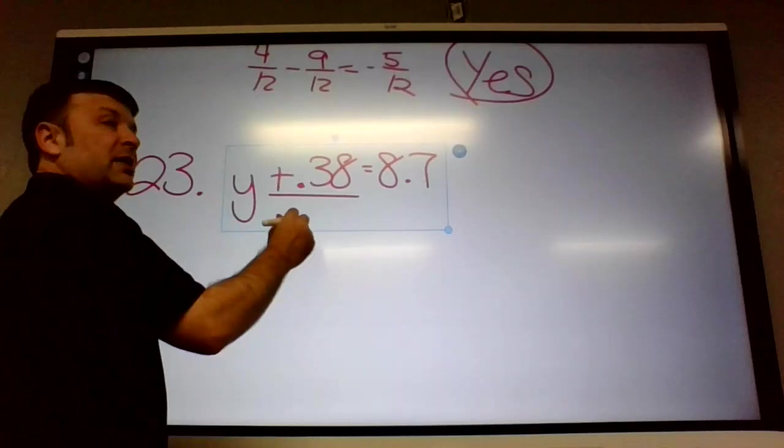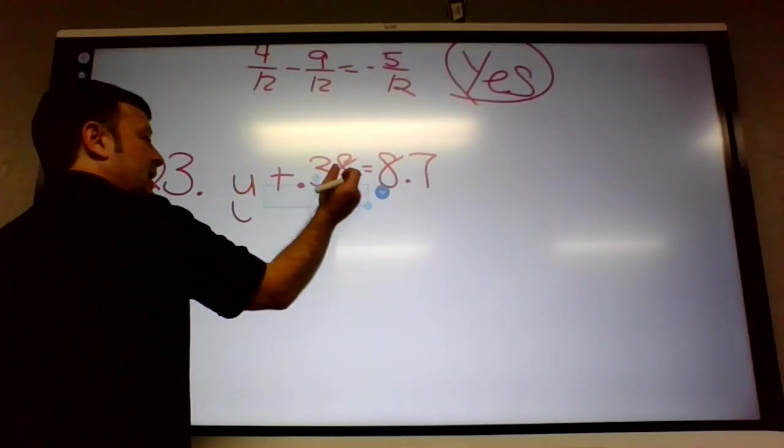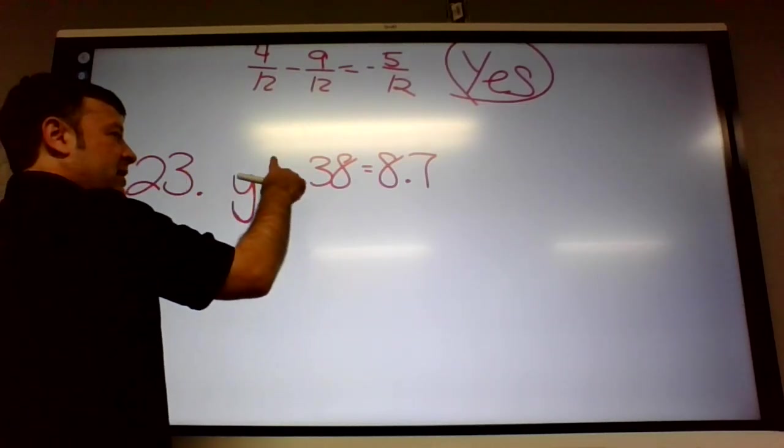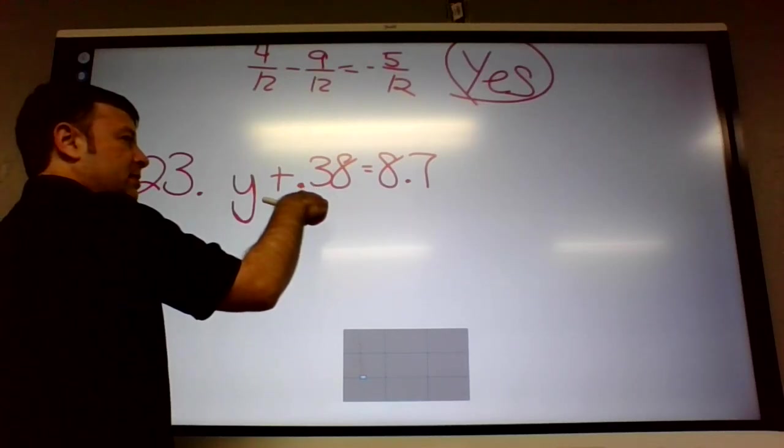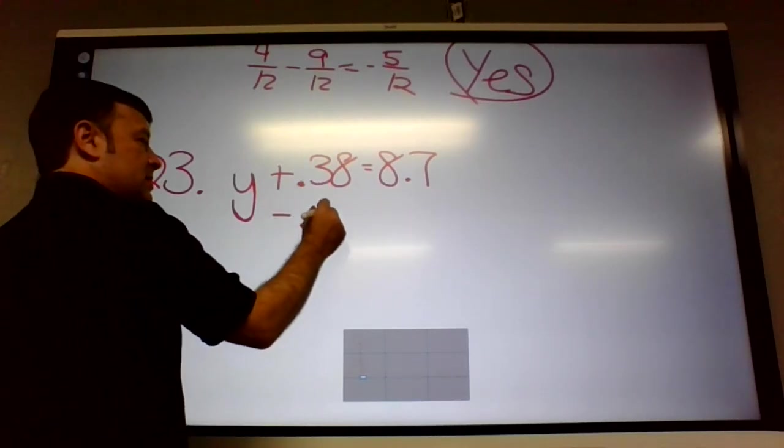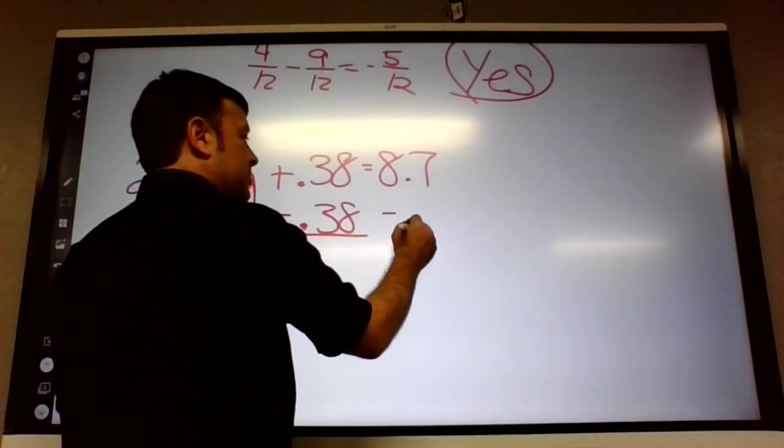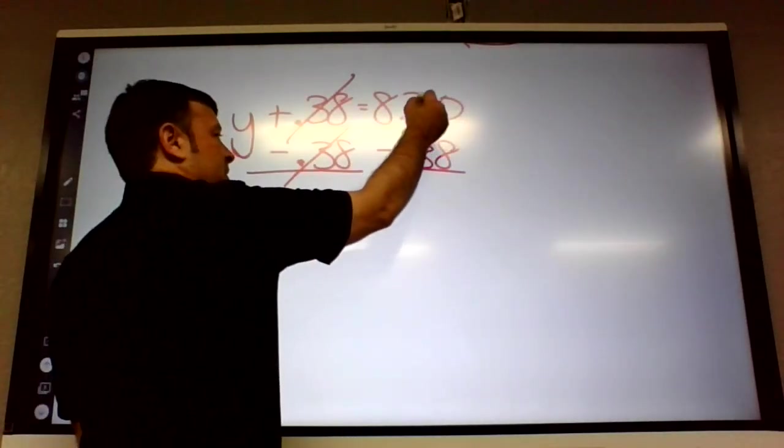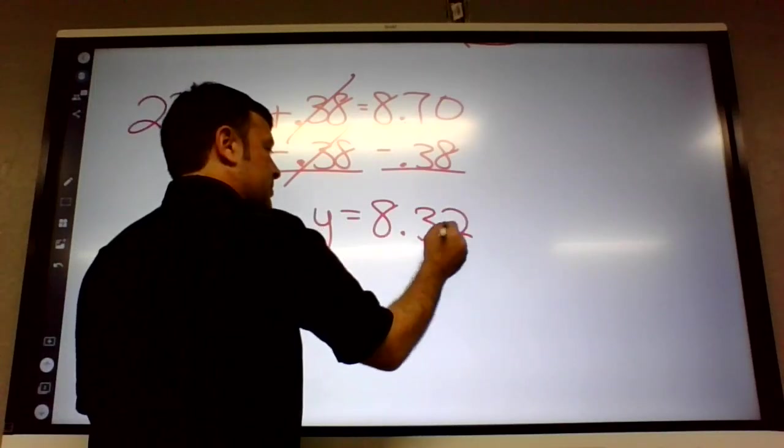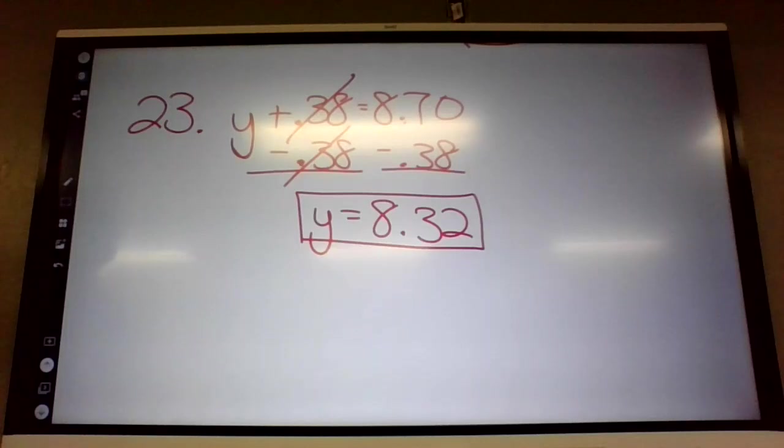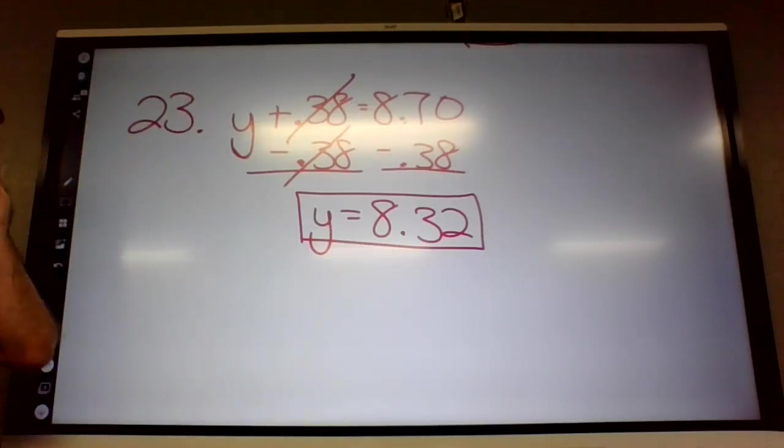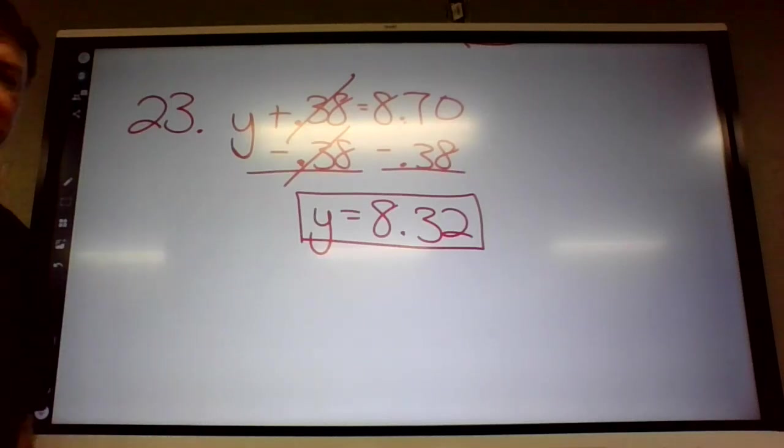Okay. We got to get y by itself. We got to get y by itself. So how do I get rid of it? Actually, we did learn a trick to move the decimal yesterday, but it's not necessary to solve this. So if we had an added value, how do we get rid of an added value? Subtract. Subtract. So, and if you do that to one side, then you do it to the other. So minus .38. So 8.7, it's like 8.32. Alright. We'll call that.